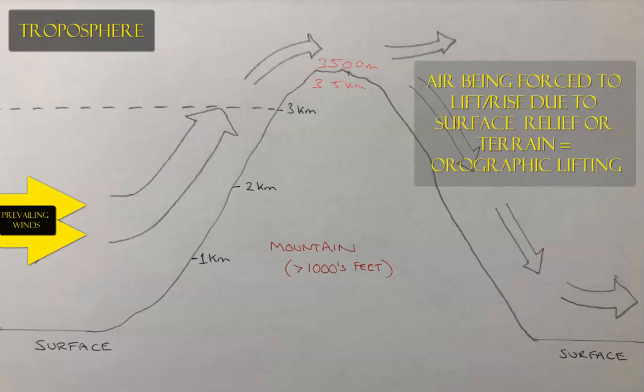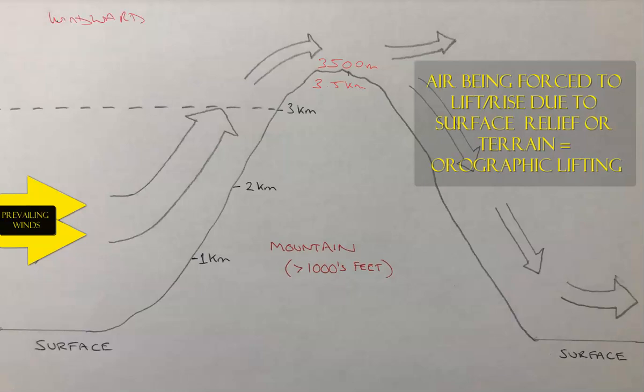This is a form of lifting air, and the air is going to start at the surface on the left-hand side with what's called the prevailing wind — the wind that has a more consistent direction throughout the year. It could be westerlies, easterlies, or northerlies, depending on latitude and location. The side of the mountain that experiences the wind is called the windward side, and on the opposite side, we call it the leeward side.